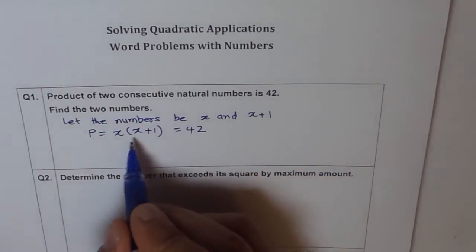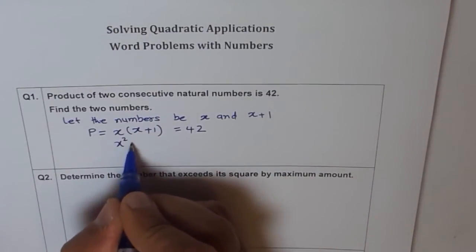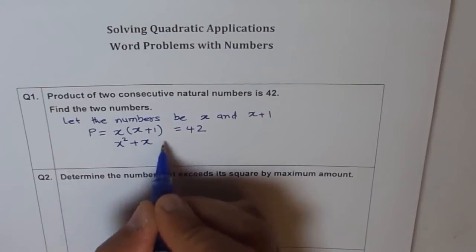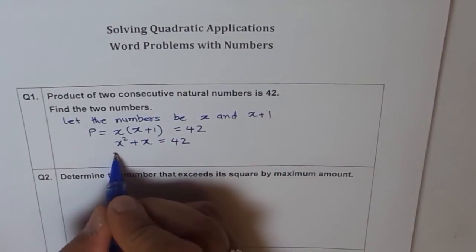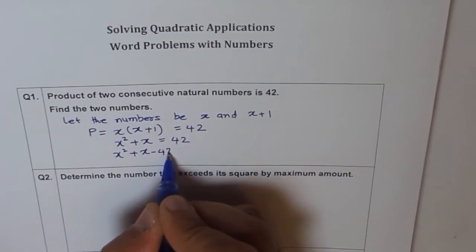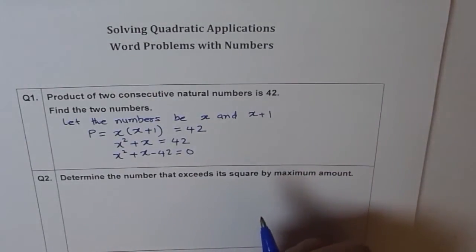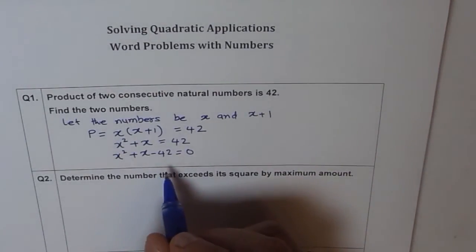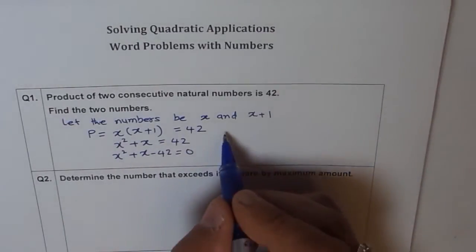So to solve it, let's expand. So x times x is x square plus x equals to 42. Now we can bring 42 to this side, x square plus x minus 42 equals to 0. So we got a standard form. If we factor it, we can find the value of x. So let's try to factor this equation, okay?